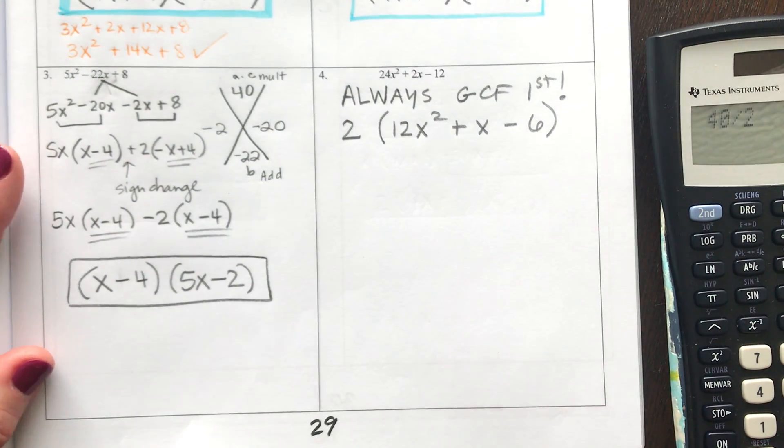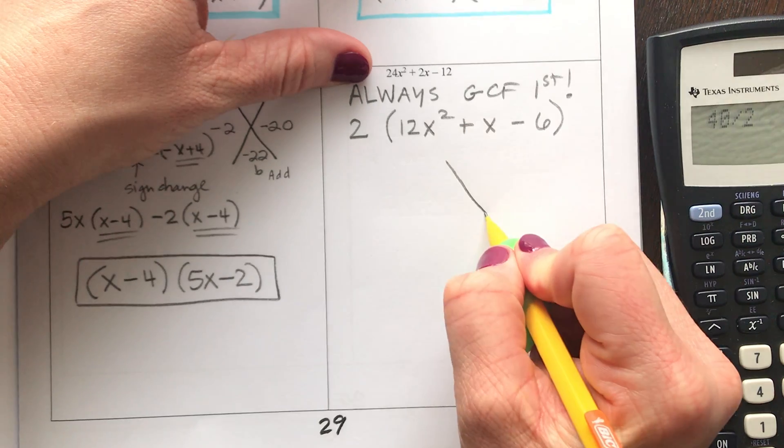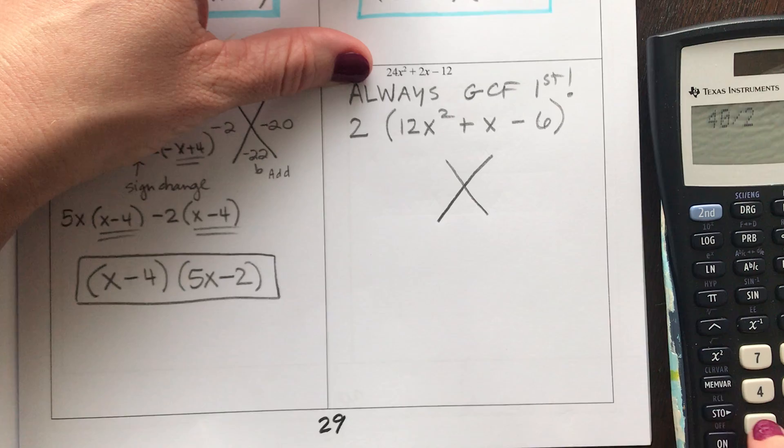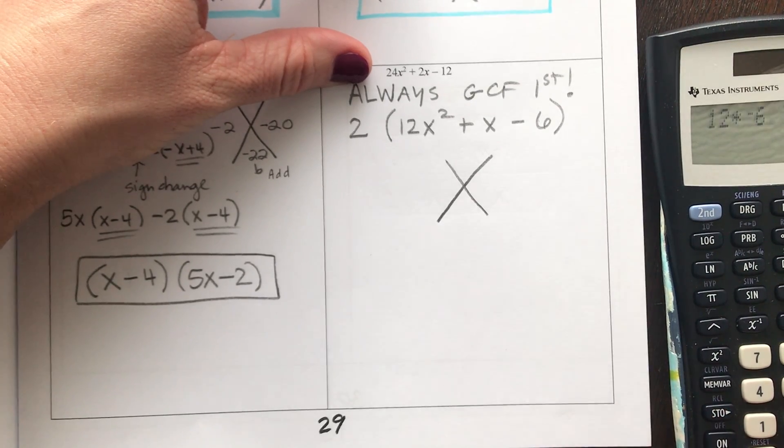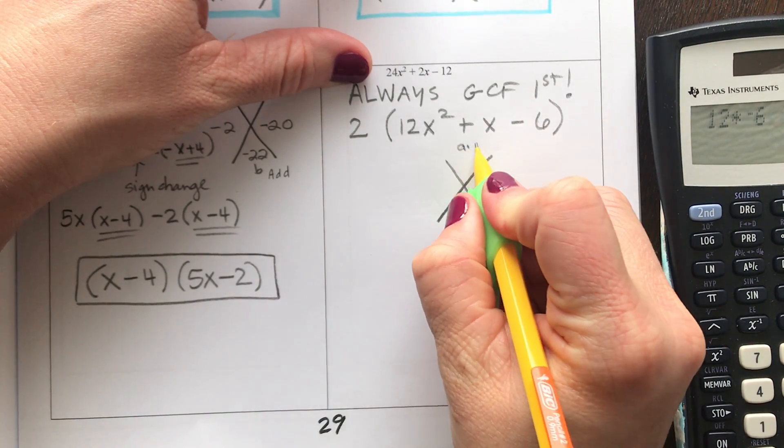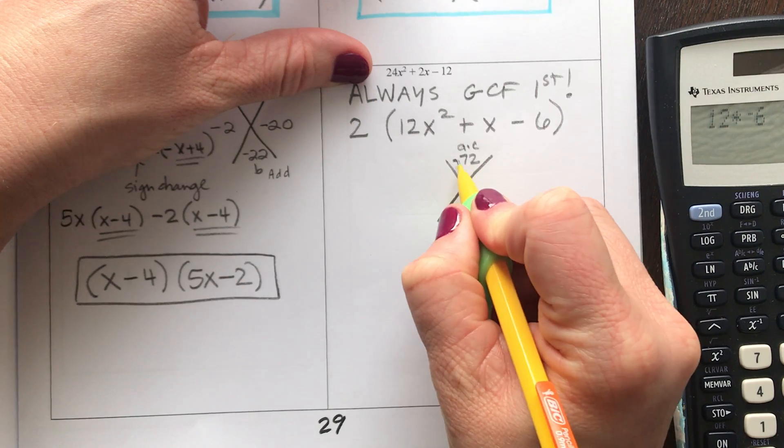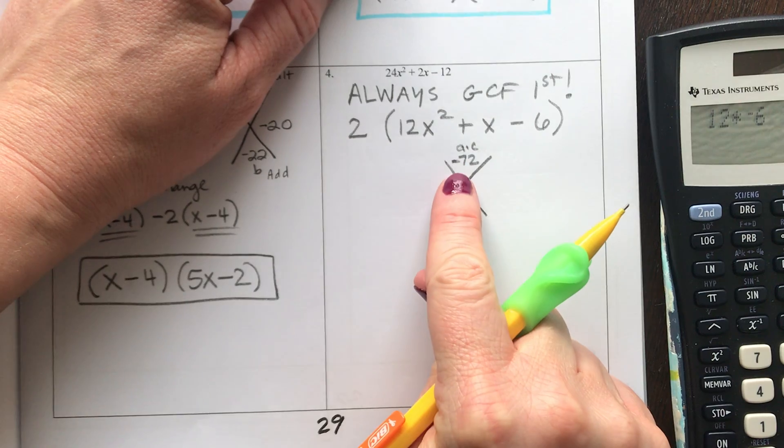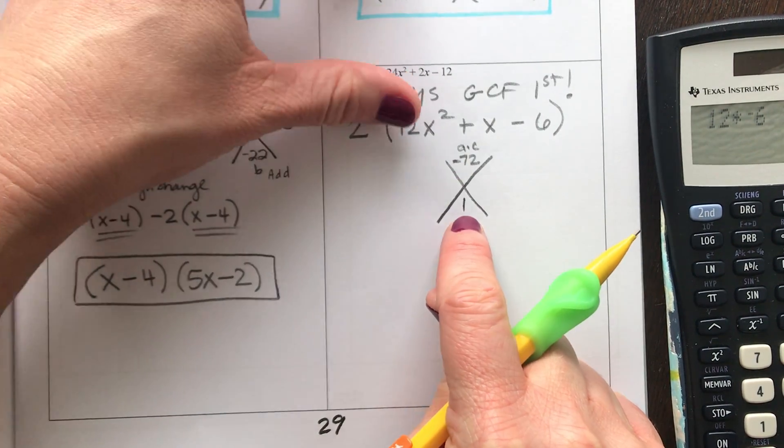Now there's not a GCF left over here, and so what I'm going to do is split the middle method. So my A times C, or 12 times -6, is -72. And my B goes at the bottom, which is 1.